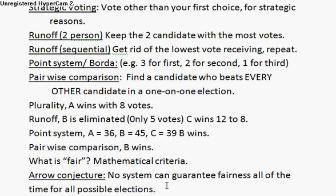This means no matter what system you have, you could have an election where a candidate wins and another candidate could say that's not fair. This gets misinterpreted a lot — it means no system can be fair 100% of the time, but that doesn't mean an individual election can't be fair. If one person is most popular compared to anyone else, they'll probably win under every type of system. Some systems are fair a lot of the time, and some systems are more fair than others. The thing to take from this conjecture is we'll never have a perfect setup where everyone agrees the right person always wins, but you can't say every election is unfair.